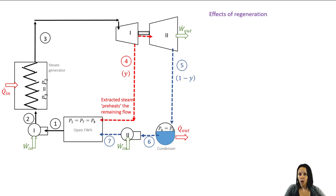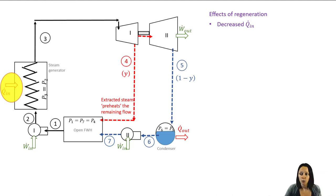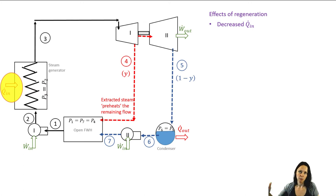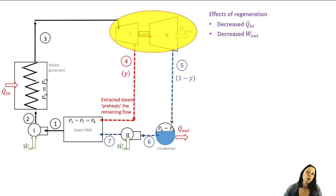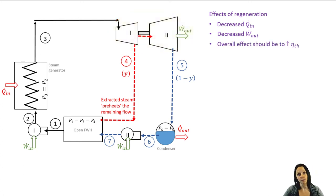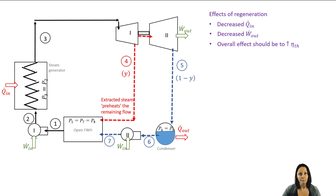The effects of regeneration: it decreases the amount of heat we have to put into the cycle because we've preheated it — we've increased the temperature a little bit more than it would have been coming in at state two, so we don't have to add as much energy to get it up to the temperature at state three. It does decrease the work output of the turbines because you're bleeding off some steam early in the expansion process, so that energy is no longer used to produce work. But the overall effect should be to increase thermal efficiency, and it'll be your job as a design engineer to figure out that balance.